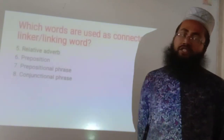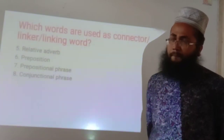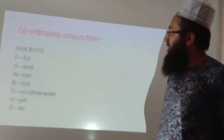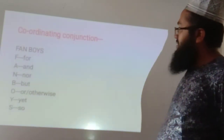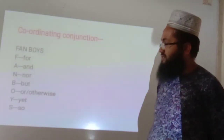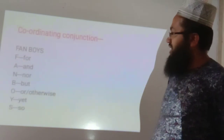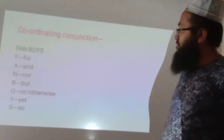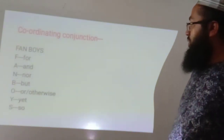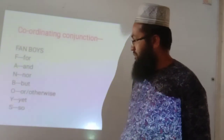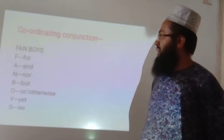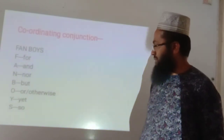First of all, I shall discuss co-ordinating conjunctions. To remember the co-ordinating conjunctions, you can use the word FANBOYS: F for 'for', A for 'and', N for 'nor', B for 'but', O for 'or' or 'otherwise', Y for 'yet', and S for 'so'. So the co-ordinating conjunctions are: for, and, nor, but, or, otherwise, yet, so.